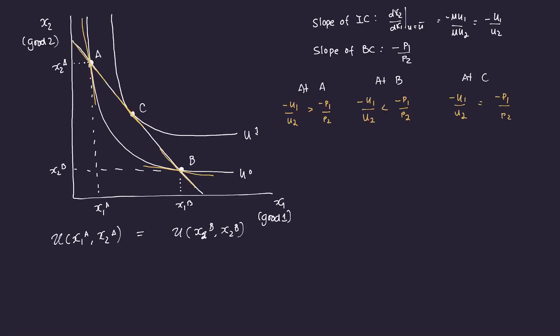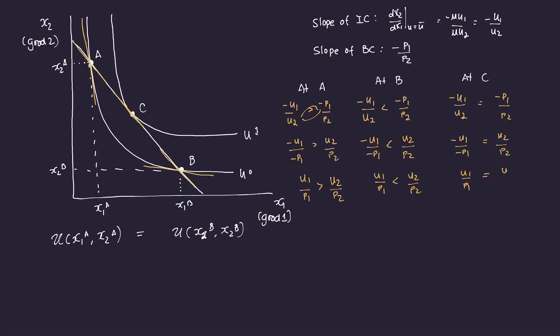We see three scenarios: at point A the slope of the indifference curve is higher; at point B the slope of the budget constraint is higher; at point C they're equal. Rearranging terms, at point A: U1 over P1 is greater than U2 over P2. At point B: U1 over P1 is less than U2 over P2. At point C: U1 over P1 is equal to U2 over P2.